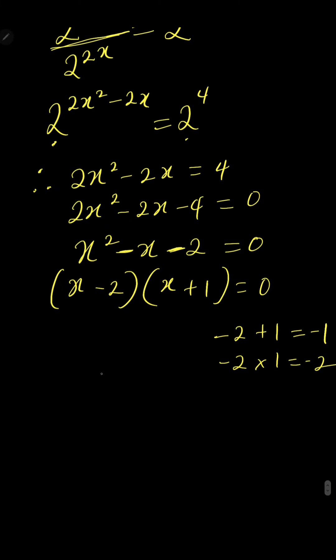When two terms are multiplying each other to give you 0, either one of them is 0 or both are 0. So either x minus 2 equals 0, meaning x is 2, or x plus 1 equals 0, so x is minus 1.